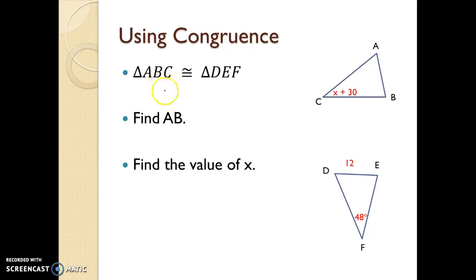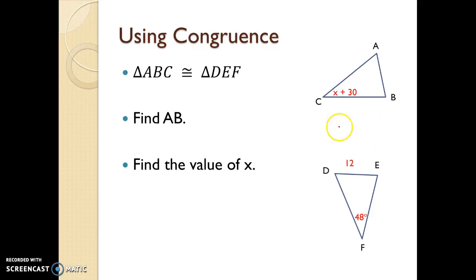The first thing that's always really important is that you take note of the congruence statement and how it relates to the picture you're given. The two triangles will not always necessarily be laid out on the paper in the exact way that they correspond to each other. So for example, ABC means that is the order that it needs to relate to the secondary triangle DEF.